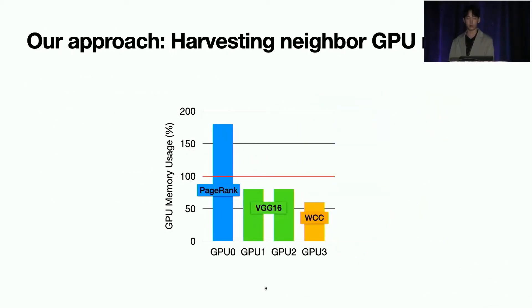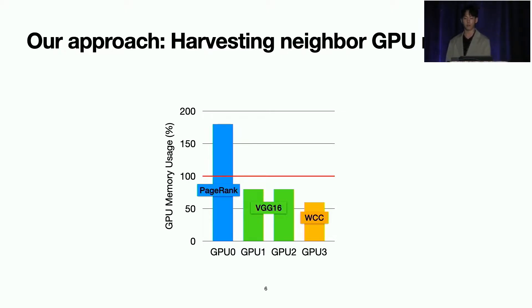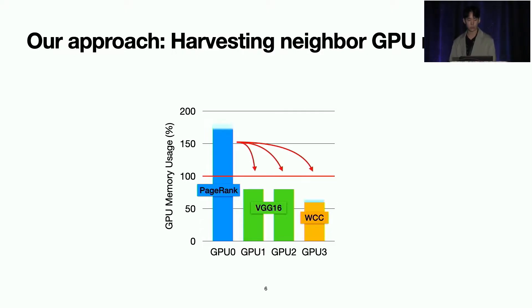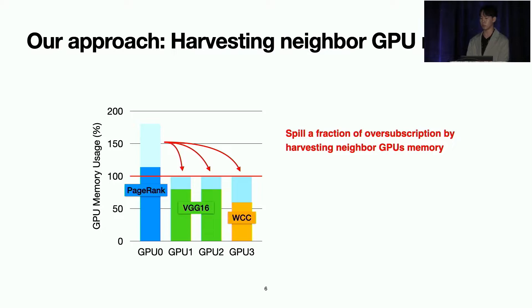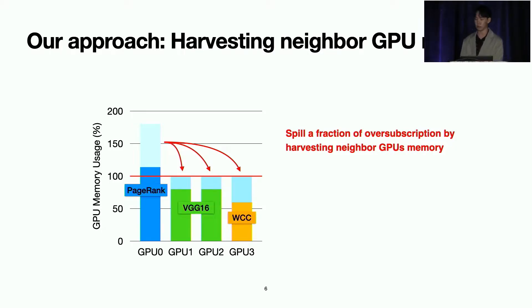Our approach to reduce the performance degradation of over-commit is to harvest neighbor GPU's memory. As memory space across GPUs is not fully utilized, it can spill some fraction of over-subscribed memory to neighbor GPUs instead of using the host memory as a swap device.